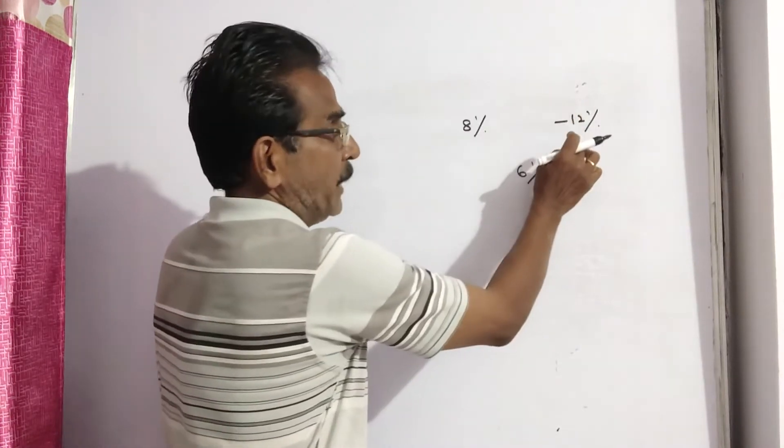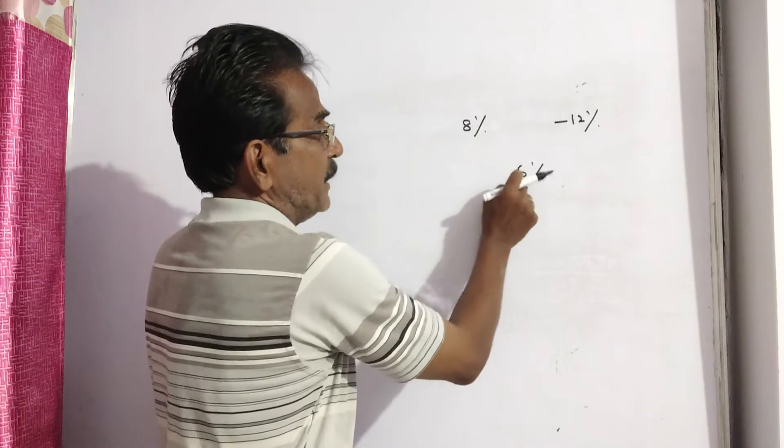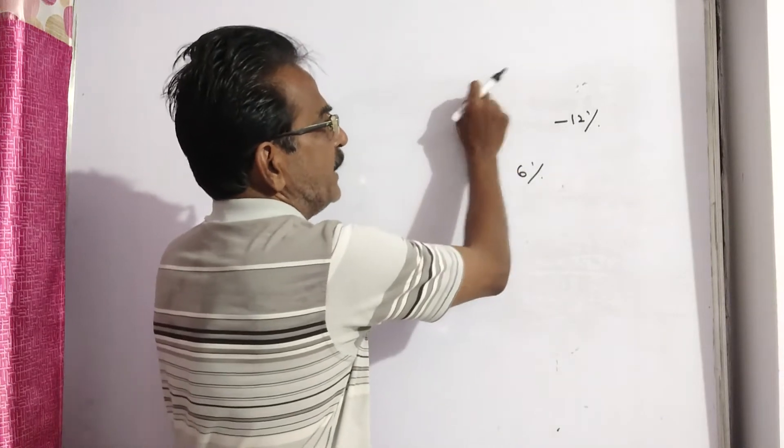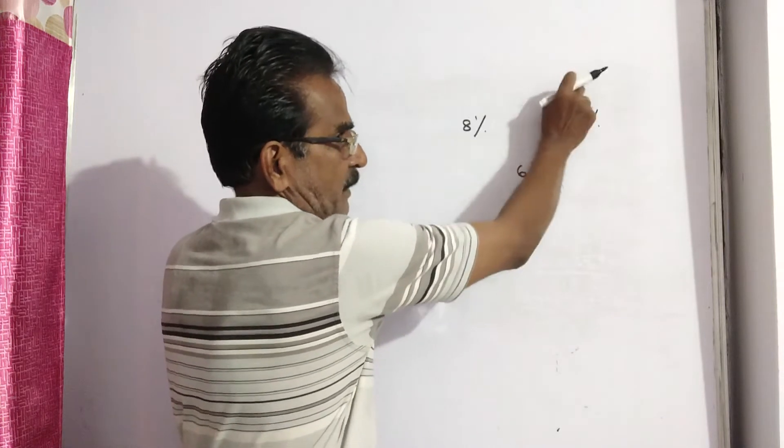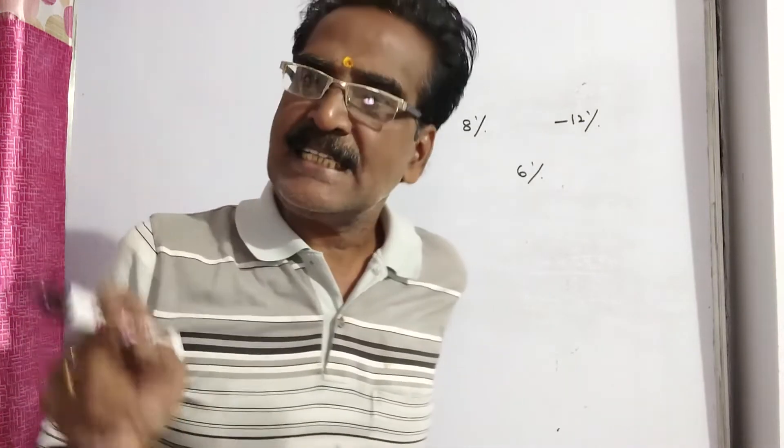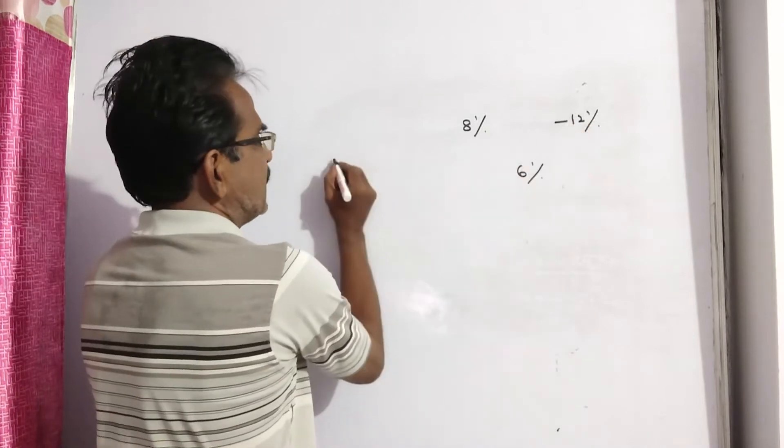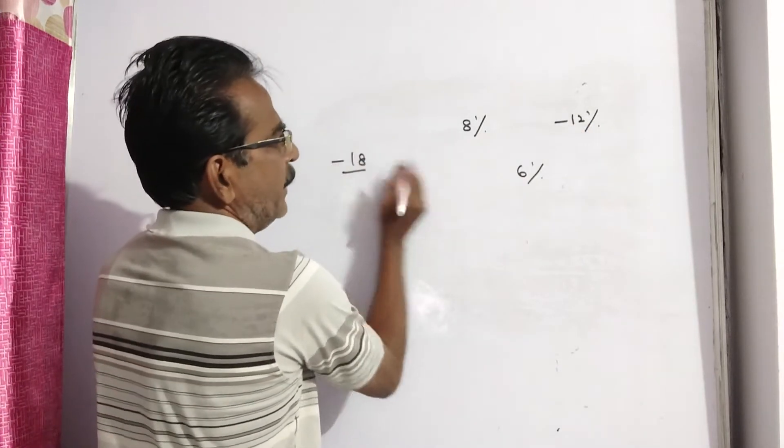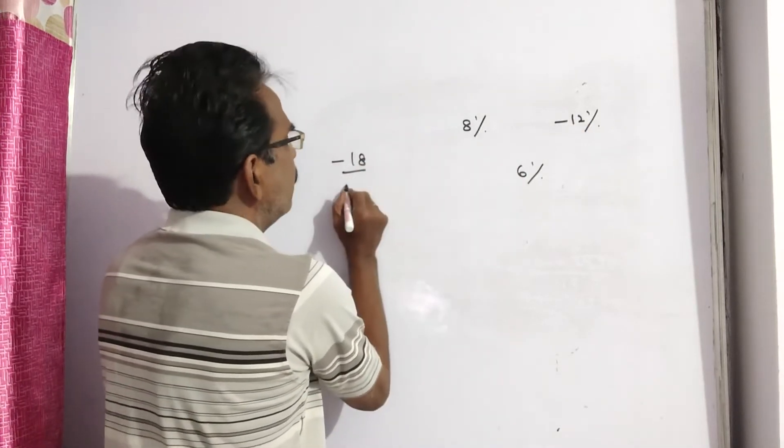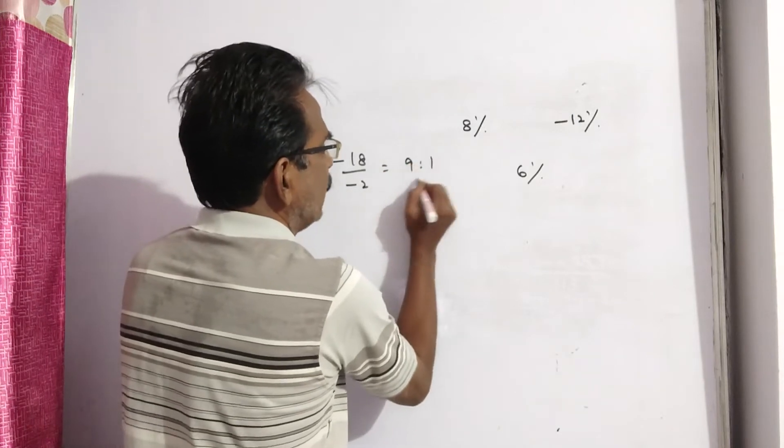See, now by doing this minus this by this minus this, we get the quantities ratio. So we can divide the total 80 articles in that ratio. So, see this minus this, minus 12 minus 6, minus 18, by 6 minus 8, minus 2, that is 9 is to 1.